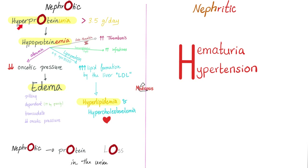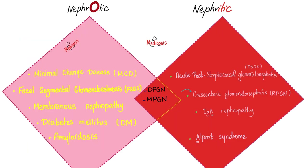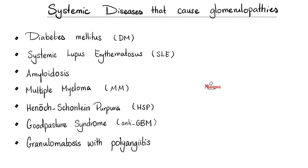Nephrotic syndrome has four things: high protein in my urine, low protein in my blood, edema, and hyperlipidemia. Nephrotic syndrome subtypes include minimal change disease, focal segmental glomerulosclerosis, and membranous nephropathy — these are primary. Diabetes and amyloidosis are secondary. Secondary diseases that can cause glomerulopathies include diabetes, lupus, amyloidosis, multiple myeloma, Henoch-Schönlein purpura, Goodpasture syndrome or anti-glomerular basement membrane antibody, and granulomatosis with polyangiitis, formerly Wegener's.